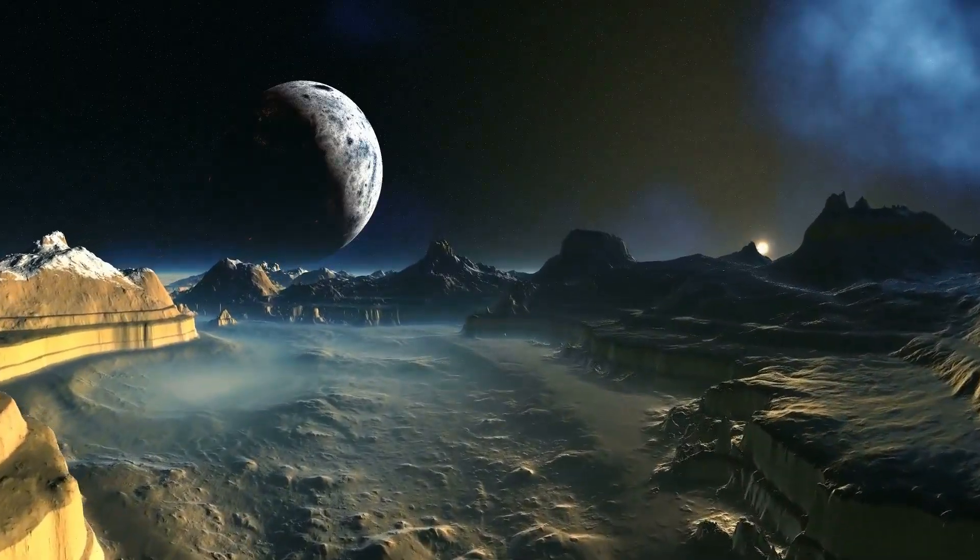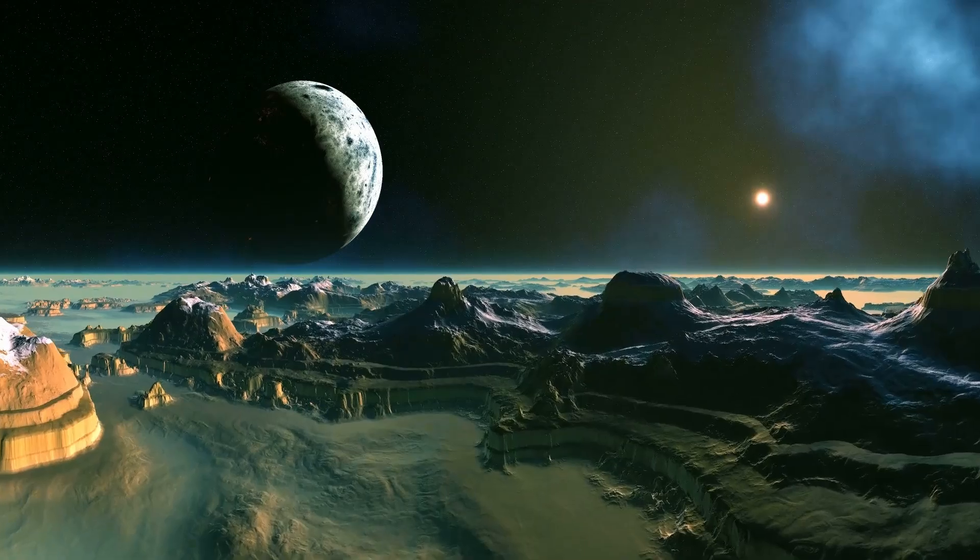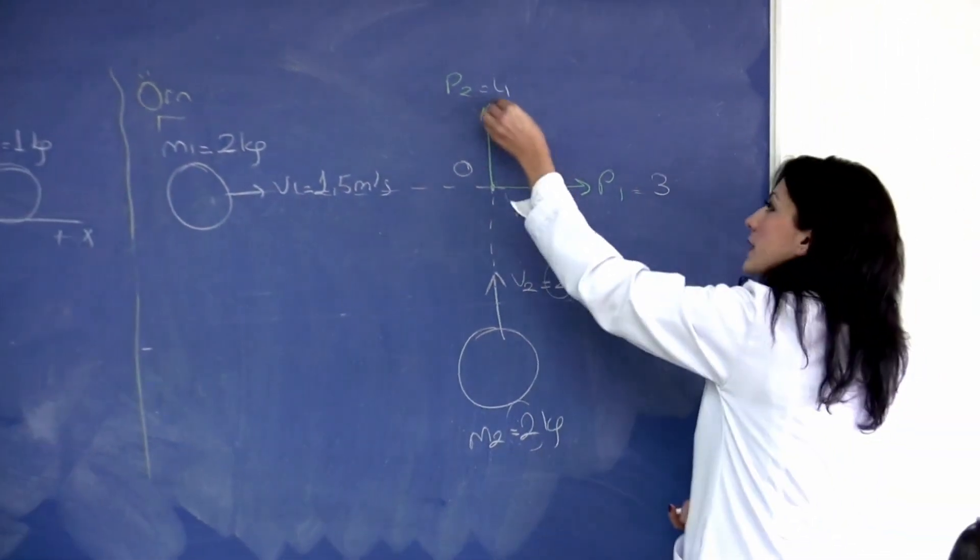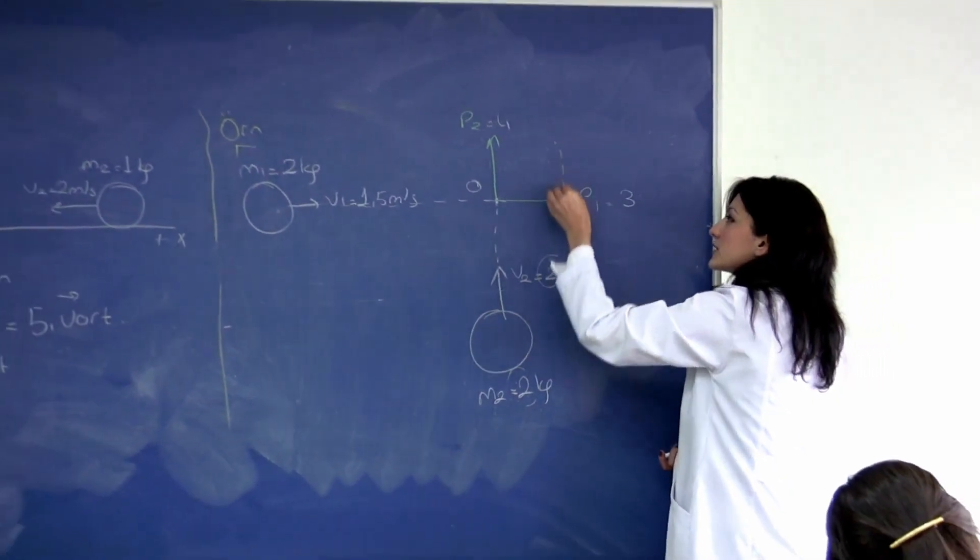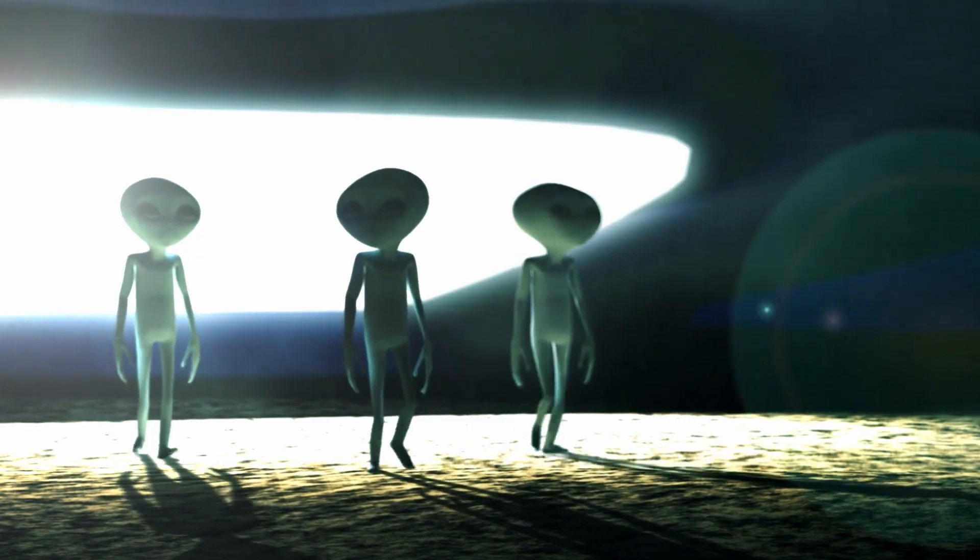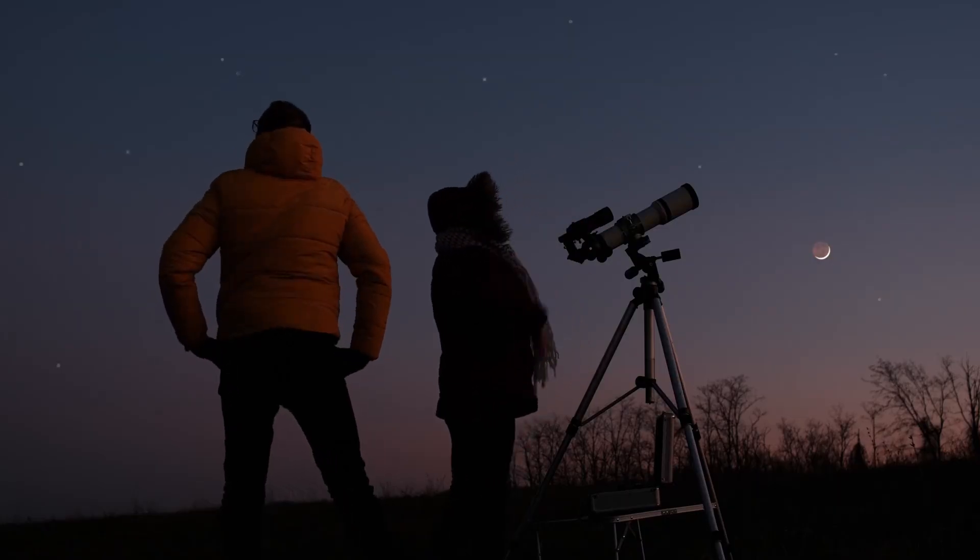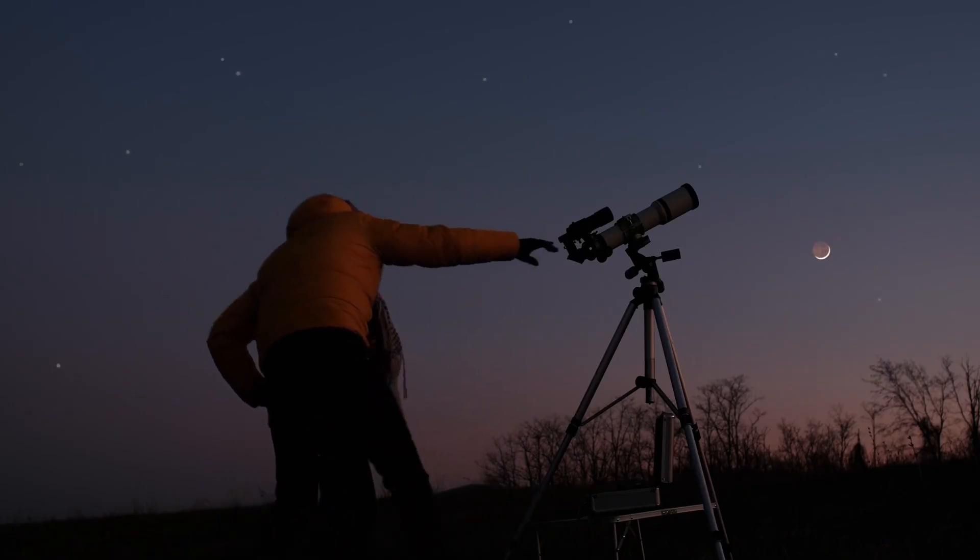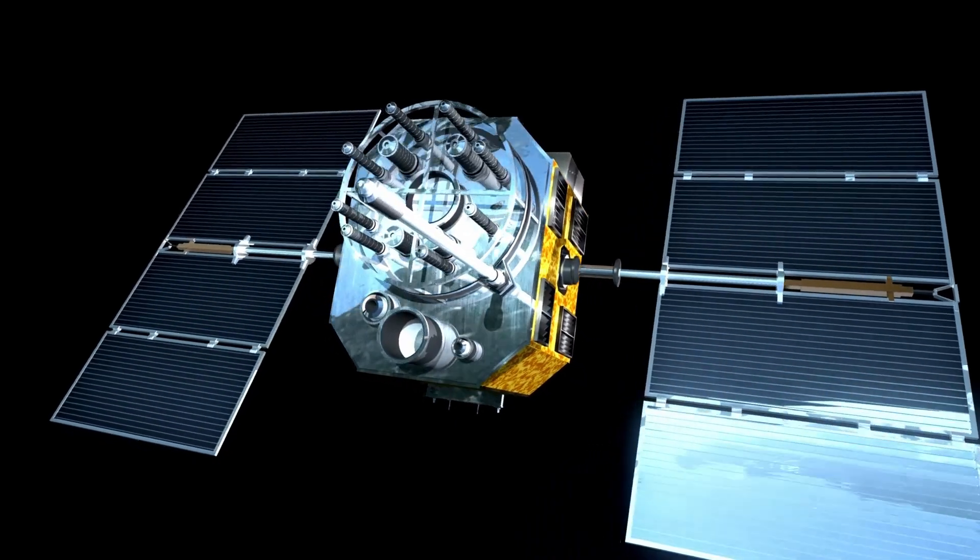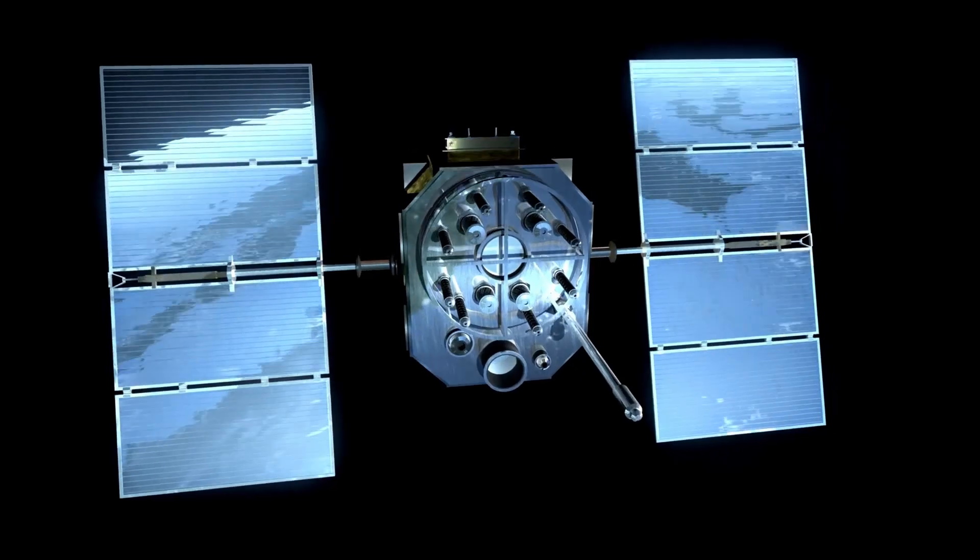When astronomers plotted the orbit of 3I Atlas, they expected chaos. An object arriving from another star system should have entered our solar neighborhood at a random angle. Instead, what they found left even the most experienced scientists speechless. The path of 3I Atlas was almost perfectly aligned with the ecliptic plane, the flat disk on which all the planets orbit the sun. Its tilt was only 4.89 degrees, a difference so small it had less than a 1% chance of happening by coincidence. No other interstellar object, not even Oumuamua or Borisov, had ever traveled this way. That was only the beginning.